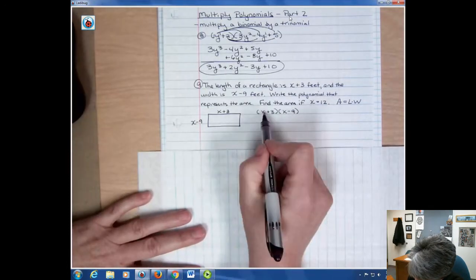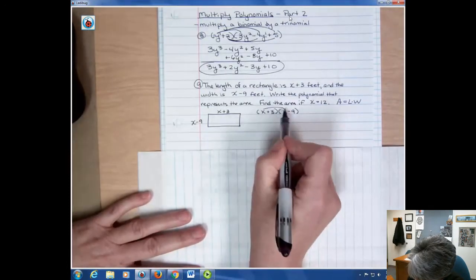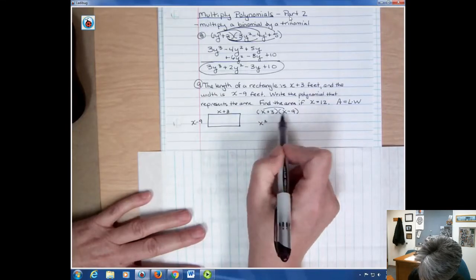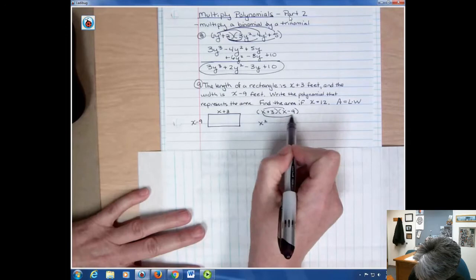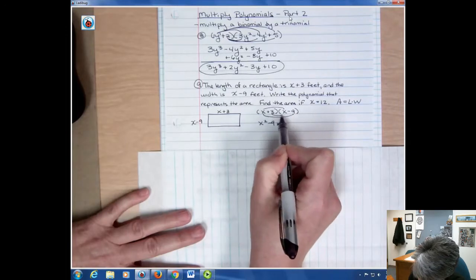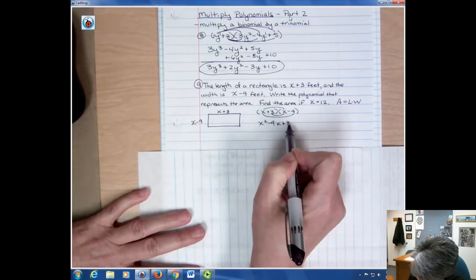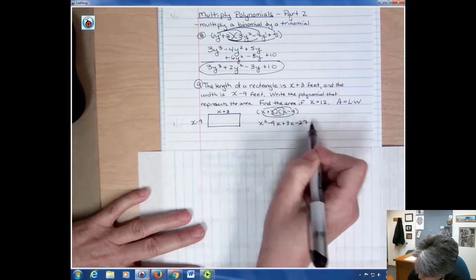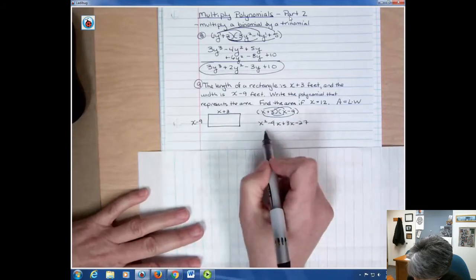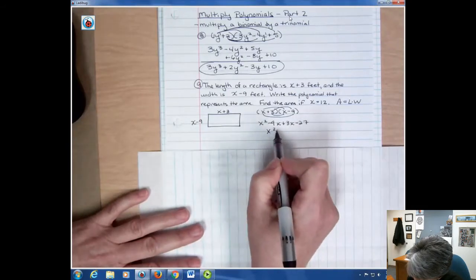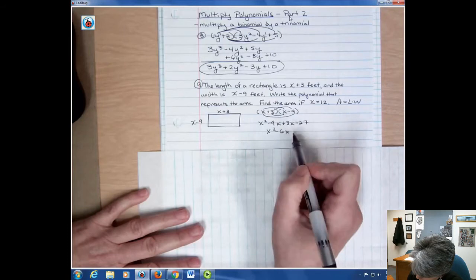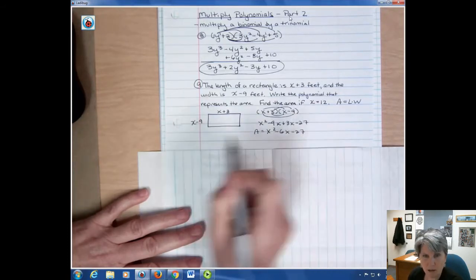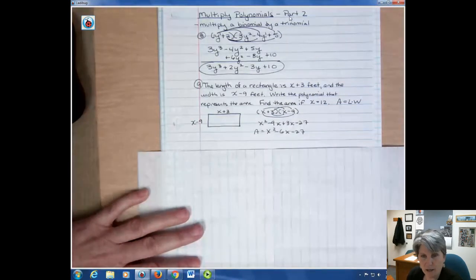F is going to be x times x. That's x squared. And then outside is negative 9x. Inside is positive 3x. And last is negative 27. So the polynomial that represents the area is x squared minus 6x minus 27. And so the area equals that polynomial. That's the first part of that answer.